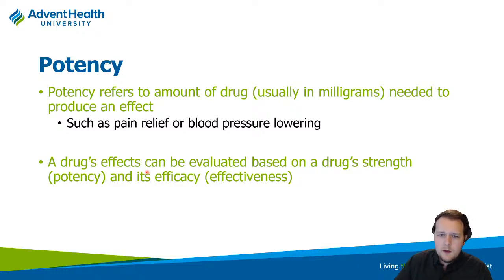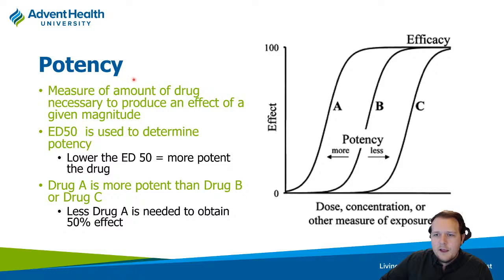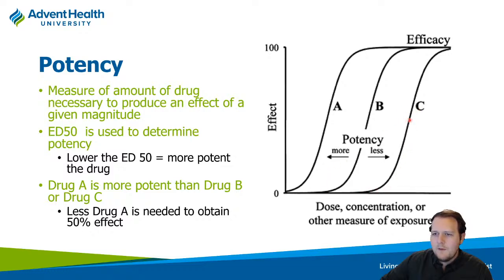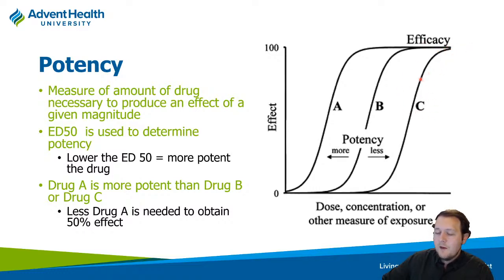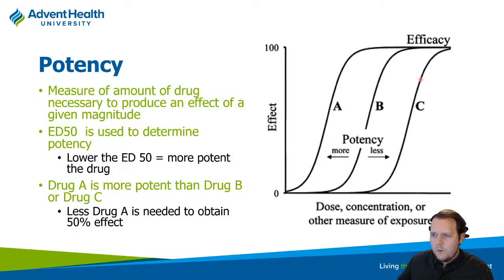Looking at potency: the further the curve shifts to the left, the more potent the drug, because a lower dose achieves a higher effect. Comparing drugs A, B, and C, drug A is most potent, B is middle, and C is least potent. Notice the efficacy can be identical between them — it just takes much more of drug C to achieve the same effect. This explains why some drugs are dosed in micrograms while others require milligrams or grams.